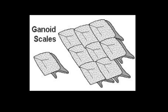The next type of scales are ganoid scales, which are also known as rhomboidal scales. These are thick rhomboid or diamond-shaped plates closely fitted like tiles and in some cases overlap.